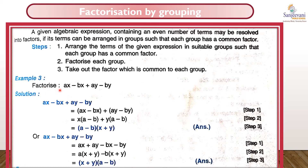For example, if I have ax - bx + ay - by, we group the x terms together: (ax - bx) + (ay - by). From ax - bx, x is common, so we get x(a - b). From ay - by, y is common, so we get y(a - b). Now (a - b) is common in both terms. So we take (a - b) out and what is left is (x + y). So the factors of ax - bx + ay - by are (a - b) and (x + y).